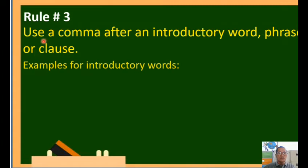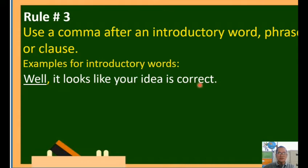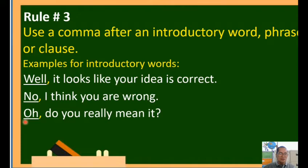Use a comma after an introductory word, phrase, or clause. Examples: 'Well, it looks like your idea is correct.' The introductory word is 'well.' 'No, I think you are wrong.' The introductory word is 'no.' 'Oh, do you really mean it?' The introductory word is 'oh.' After each introductory word, place a comma followed by a space before continuing the sentence.